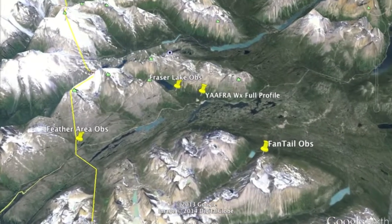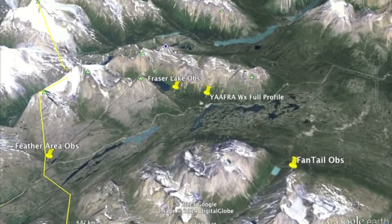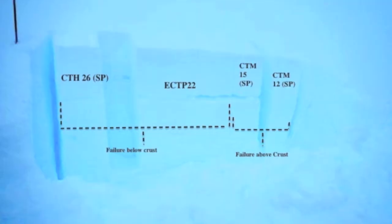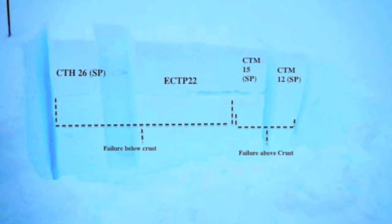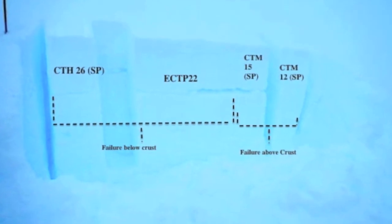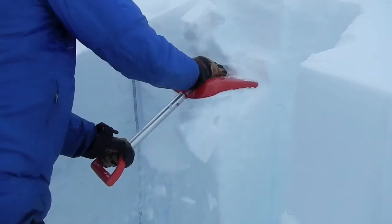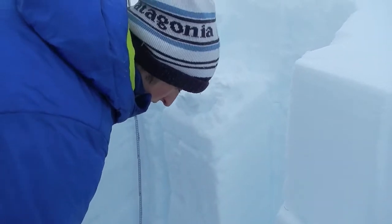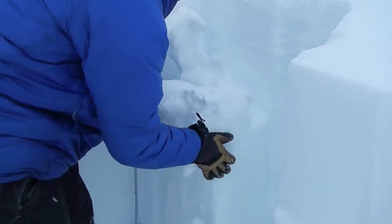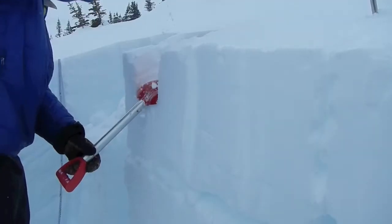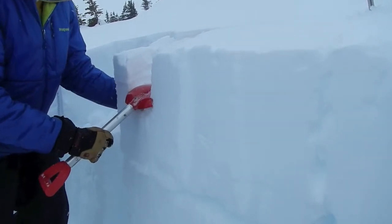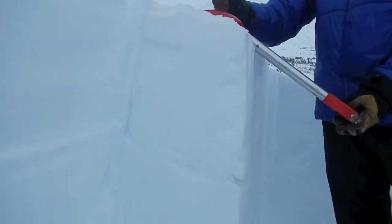Let's zoom in on a profile site in the Fraser Lakes area. Here, approximately 45 centimeters overlies our February 13th crust interface. But the more intriguing thing is the variability in test results and crust structure found across the profile, indicating that both on a micro and a macro scale, this layer is quite variable.